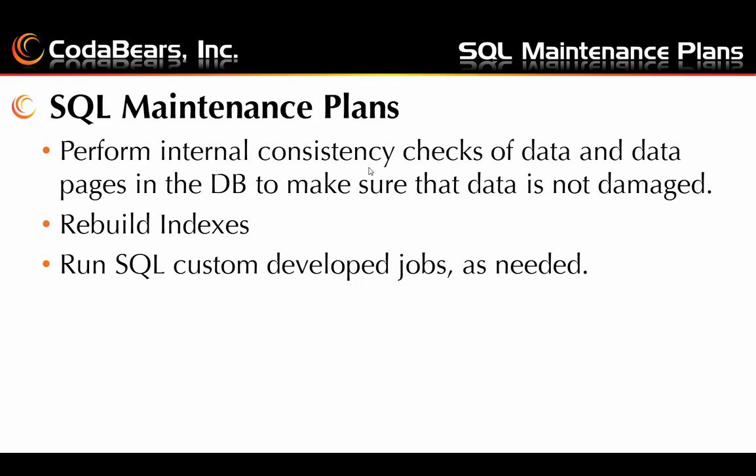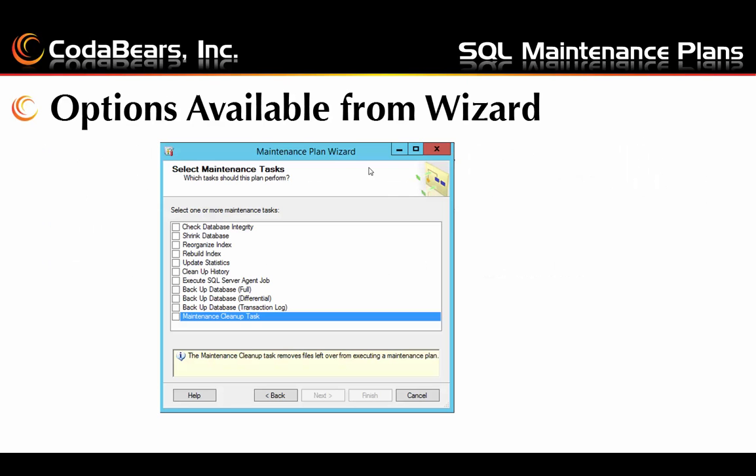Disk space can be conserved by not only deleting old files but compressing data pages and removing empty data pages. The plans can also perform consistency checks on your data pages in the database to make sure things aren't damaged, and if you have damage, you can be notified of it right away. You can rebuild your indexes and run custom developed jobs as needed. We're going to be using the Maintenance Plan Wizard today to show you the easy way to get things done.